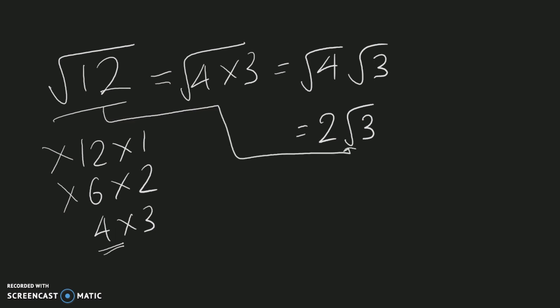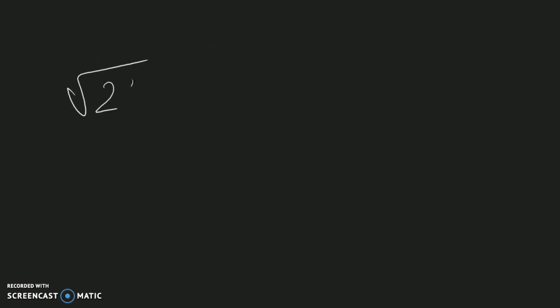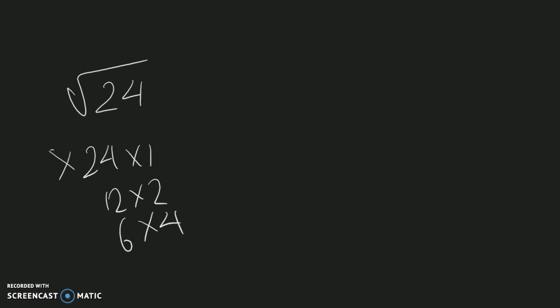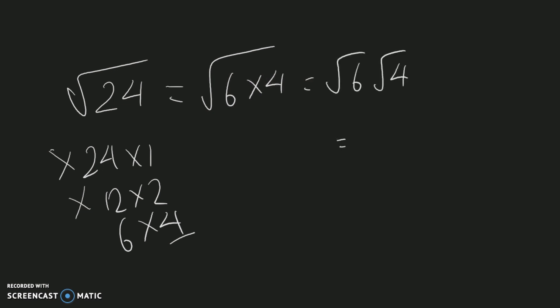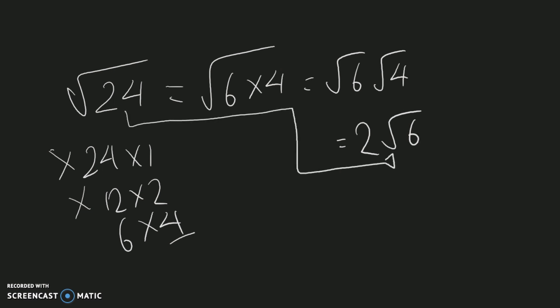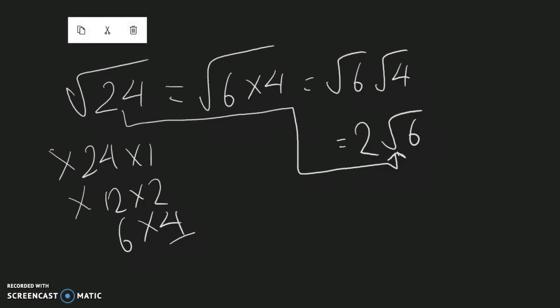Here's another example: the square root of 24. The factor pairs are 24×1, 12×2, and 6×4. The pair 6×4 contains the square number 4, so we use it. This gives square root of six times square root of four, and the square root of four is two, so the square root of 24 equals 2 root 6.